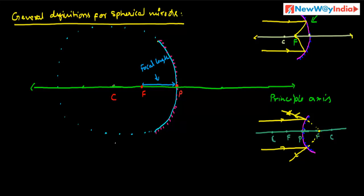Next is the radius of curvature. The linear distance between the pole and the center of curvature is called the radius of curvature. It is denoted by capital R.